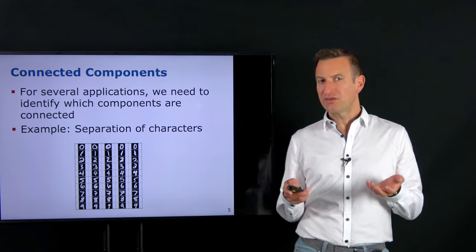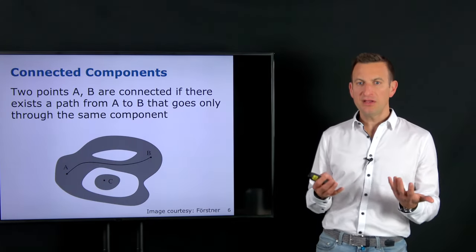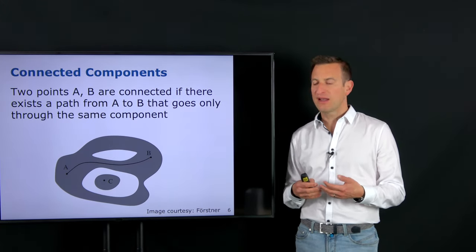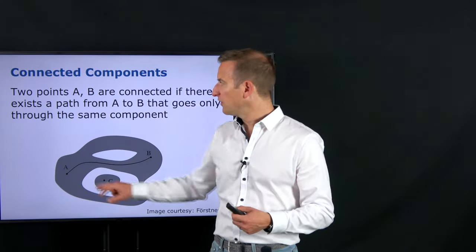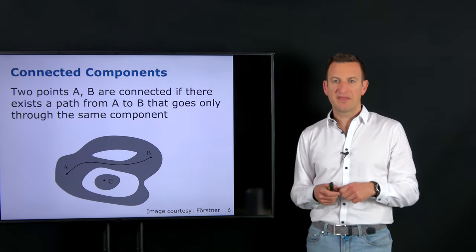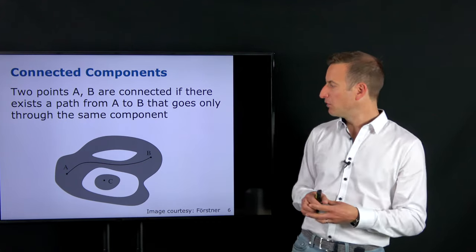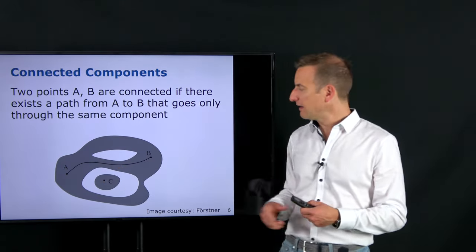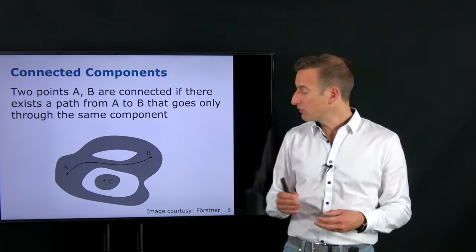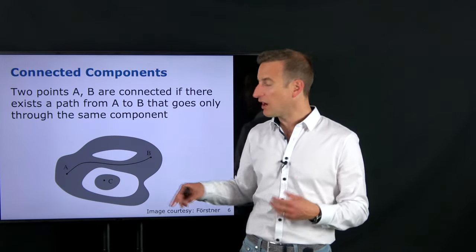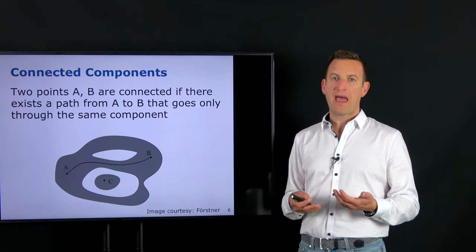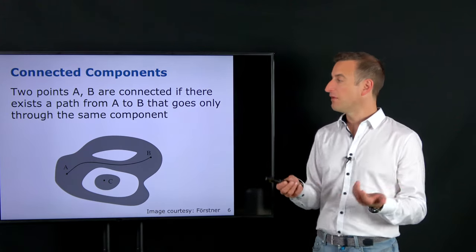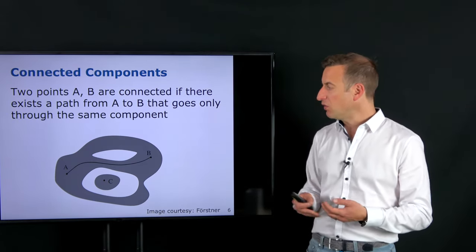To compute connected components in an image of only zeros and ones, we first need to understand what a connected component is. In a continuous space, a connected component is defined by a set of points where two points A and B are connected if there is a path from A to B that passes only through that single component. For example, two areas are not connected if there is no path between them that avoids the white regions.